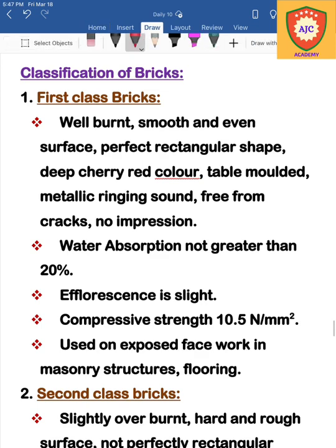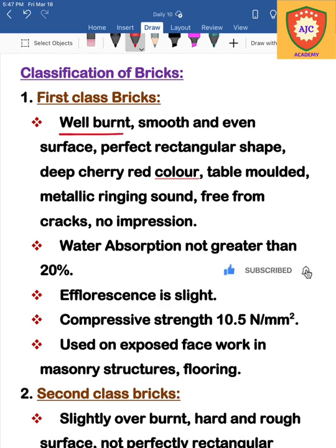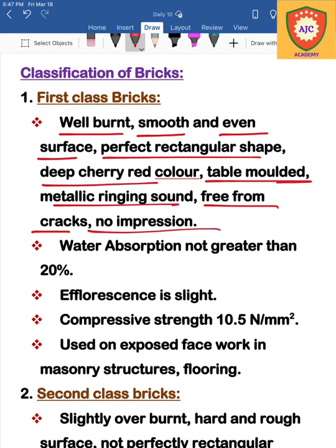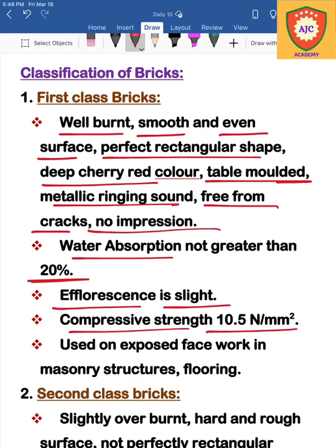Bricks are classified into four types or four classes: first class, second class, third class, and fourth class. First class bricks are well burnt, smooth and even, perfectly rectangular in shape, deep cherry red in color, and table molded. They produce a metallic ringing sound. Water absorption capacity is 20%, efflorescence is slight, and compressive strength is 10.5 N/mm².